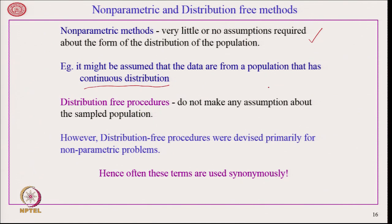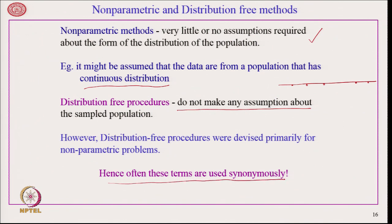This is in contrast with distribution-free. These two terms — distribution-free and non-parametric — are not quite synonymous; they have a subtle difference. Non-parametric methods have very little or no assumptions required, but sometimes we shall assume that data comes from a population with a continuous distribution. Distribution-free properties do not make any assumption about the sample population whatsoever. However, distribution-free procedures were devised primarily for non-parametric problems, so often these two terms are used synonymously.